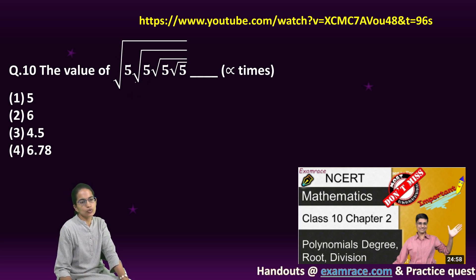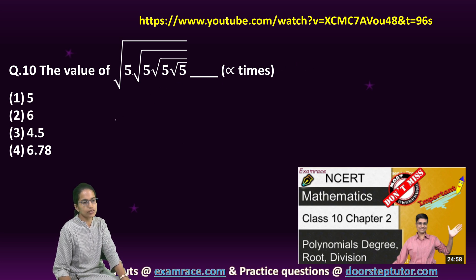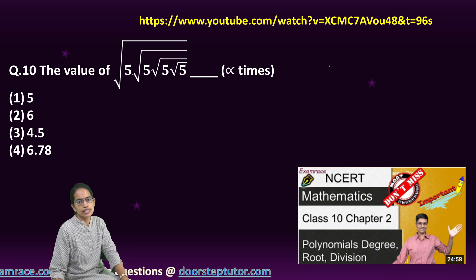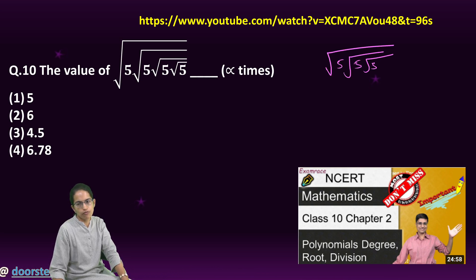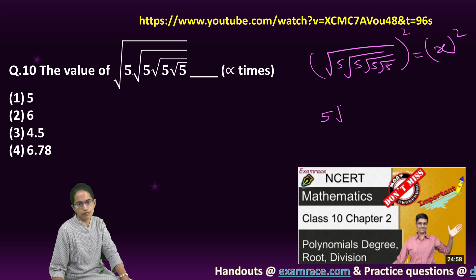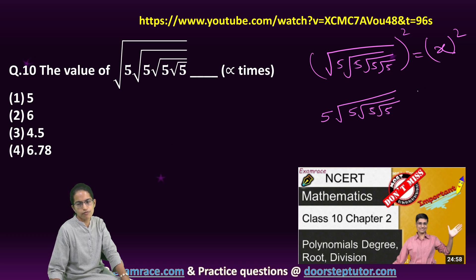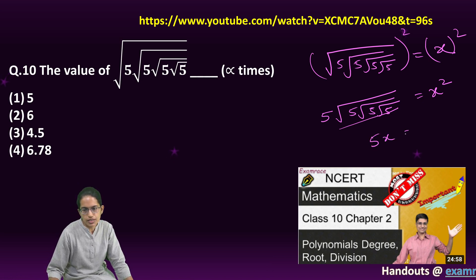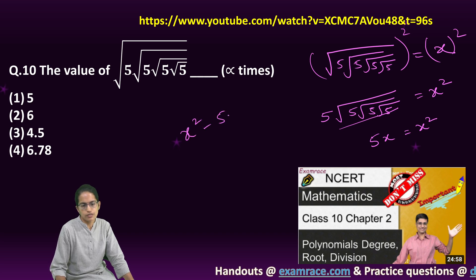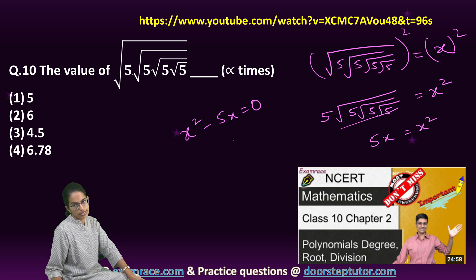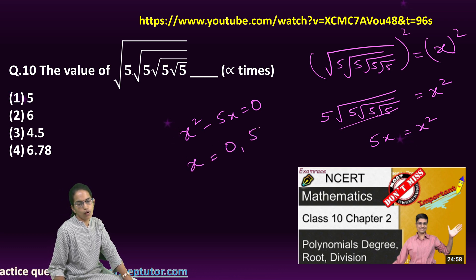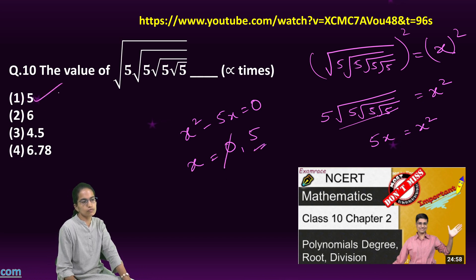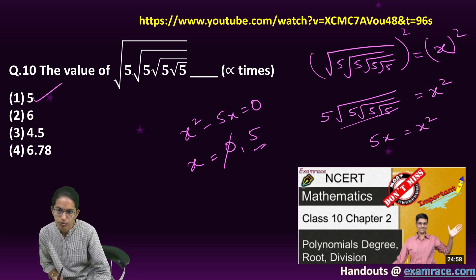This is a very interesting problem: find the value of √(5·√(5·√(5·√5...))) going to infinity. Let x = √(5·√(5·√5...)) . Squaring both sides: x² = 5·√(5·√5...) = 5x. So x² - 5x = 0, meaning x(x-5) = 0, giving x = 0 or x = 5. Since 0 cannot be the option, the answer is 5.